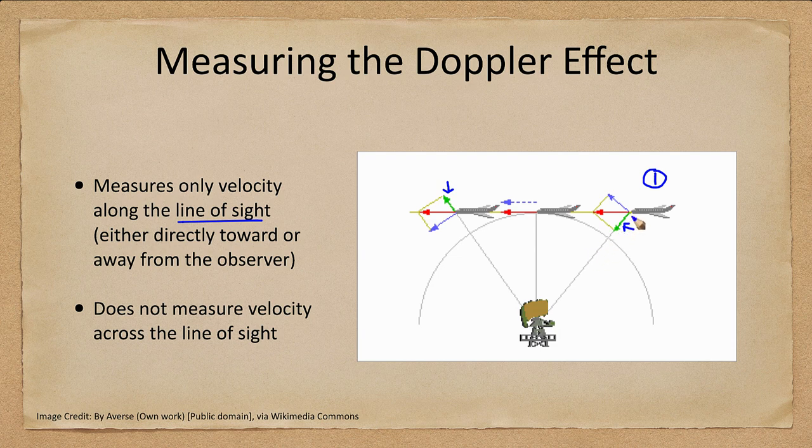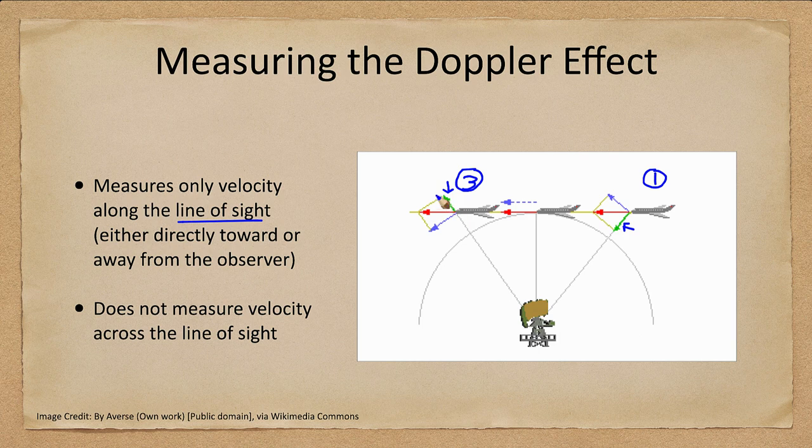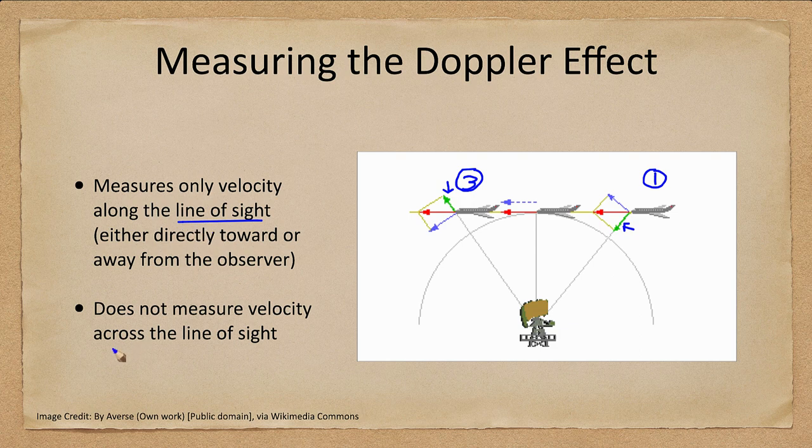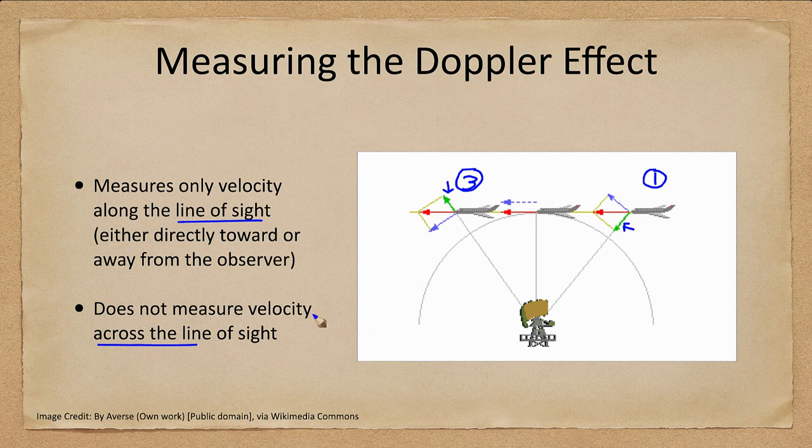At position three here we see that the green arrow is pointing away and that means that it is moving away from the observer. Note that that's different than the actual velocity through space given by the red arrow. The red arrow is the combination of the velocity along the line of sight and the velocity across the line of sight. The Doppler effect cannot measure the velocity across the line of sight, and that's what's shown as the blue arrow here.